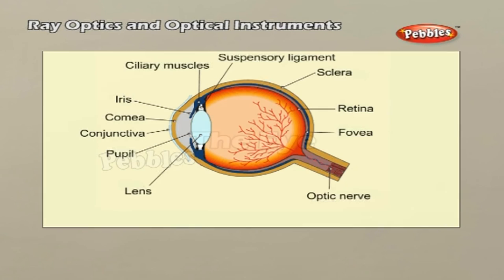The eye. Light enters the eye through a curved front surface, the cornea. It passes through the pupil, which is the central hole in the iris. The size of the pupil can change under control of muscles. The light is further focused by the eye lens on the retina. The retina is a film of nerve fibers covering the curved back surface of the eye. The retina contains rods and cones, which sense light intensity and color.